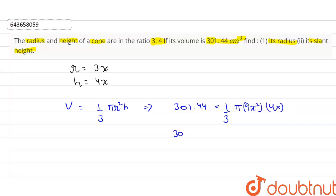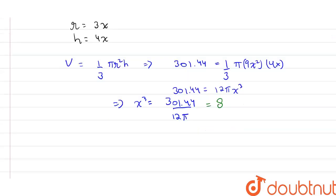This becomes 301.44 = 12πx³. This implies x³ = 301.44 divided by 12π, which comes out to be 8.